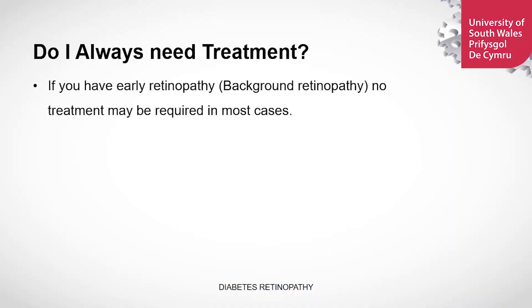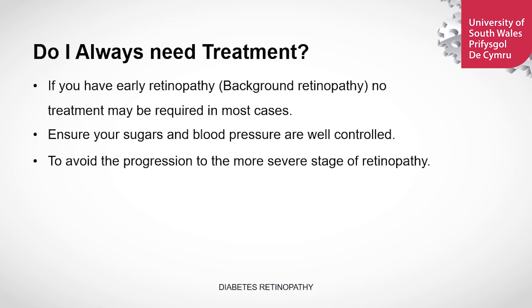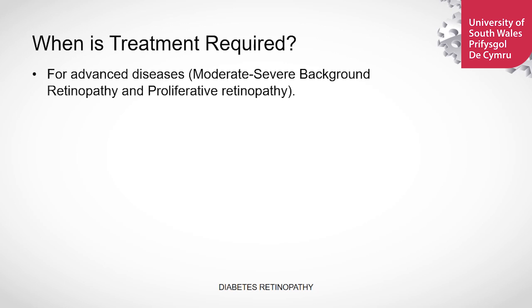The photographs can be compared with previous photos to show the progression of the disease. If discovered early enough, there is no need for treatment for most cases — that is when you have the background retinopathy. What you need to ensure is that your sugars and blood pressure are well controlled, and this prevents the progression of the disease to the more severe form of retinopathy. However, make sure that you have your regular checkups as advised by your doctor. When is treatment required? For patients with advanced disease, those who have severe background retinopathy as well as proliferative diabetic retinopathy, they require some form of treatment.